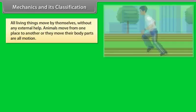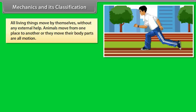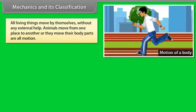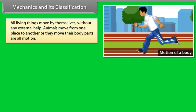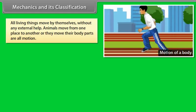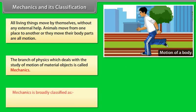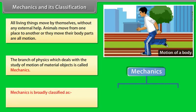Mechanics and its classification: All living things move by themselves without external help. Animals move from one place to another, or they move their body parts — all of these are motion. The branch of physics which deals with the study of motion of material objects is called mechanics. Mechanics is broadly classified as: (1) Statics, and (2) Kinematics.